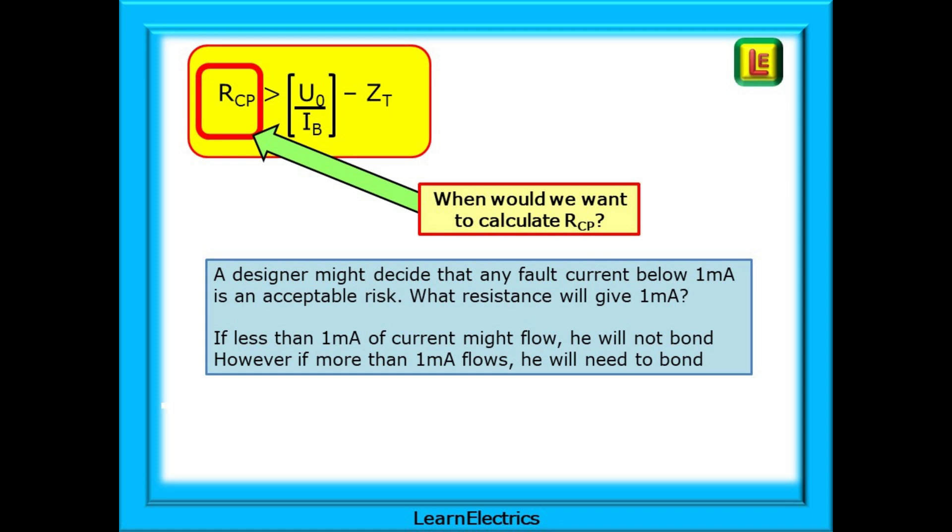A designer might decide that any fault current below 1 milliamp is an acceptable risk. If less than 1 milliamp of current might flow, he will not bond the conductive parts. However, if more than 1 milliamp flows, he or she has decided that they will need to bond, as these will now be extraneous conductive parts. If the designer knows the maximum current that they do not want to exceed, the formula will tell them the minimum resistance that must exist. Let's calculate this example.